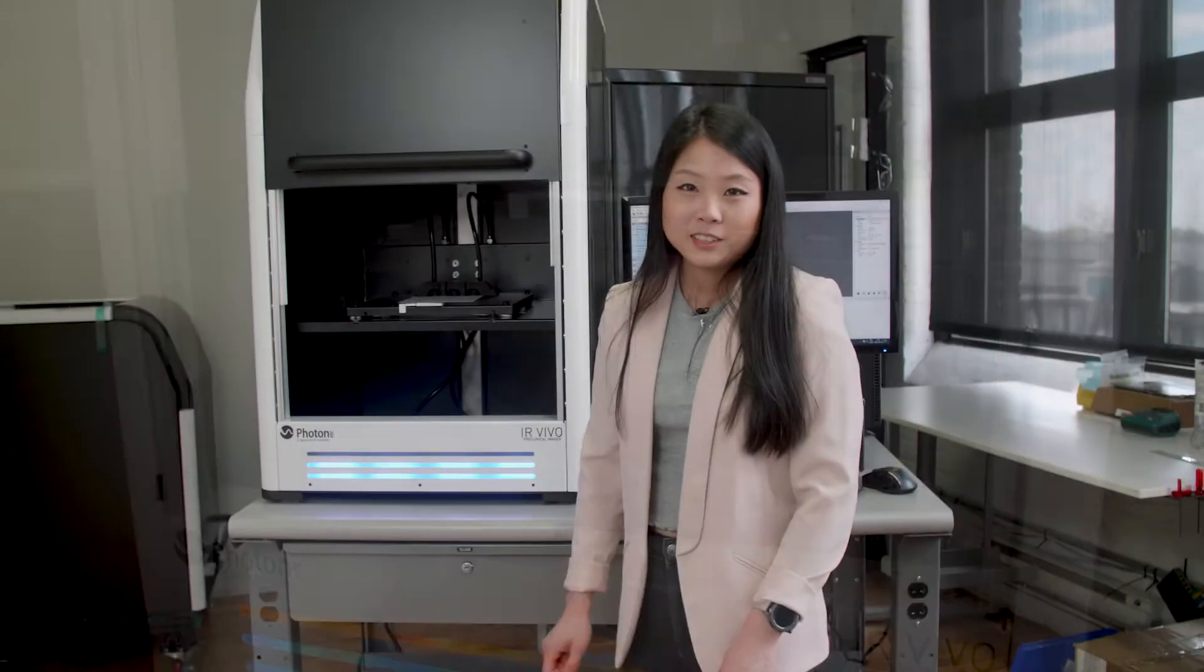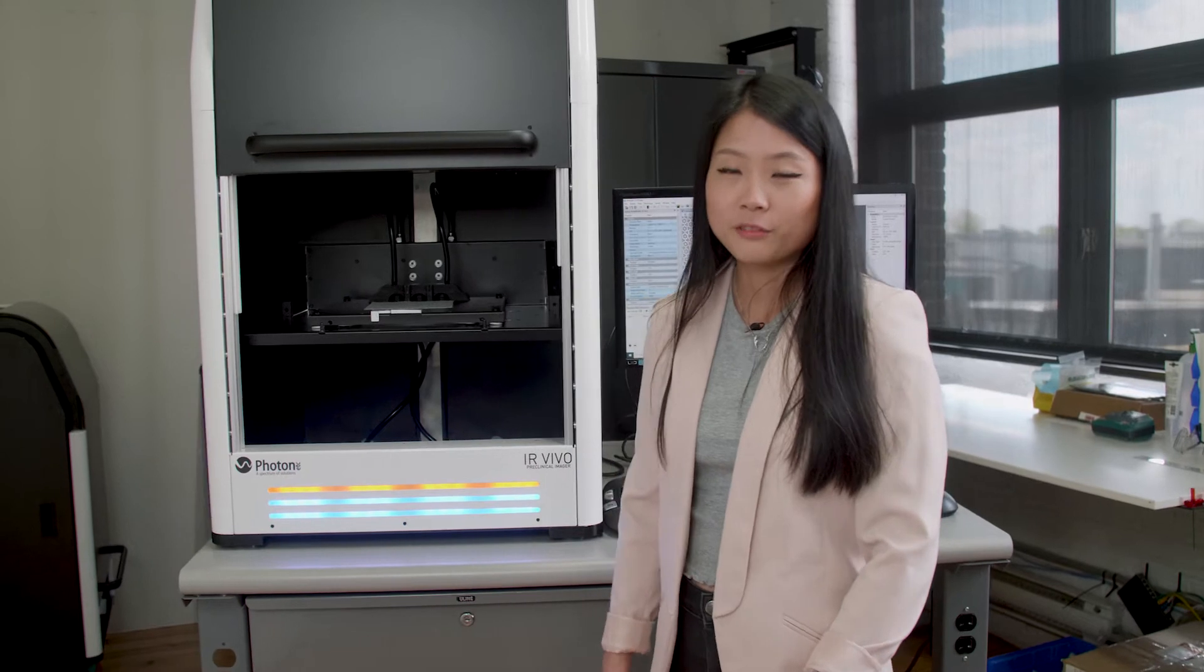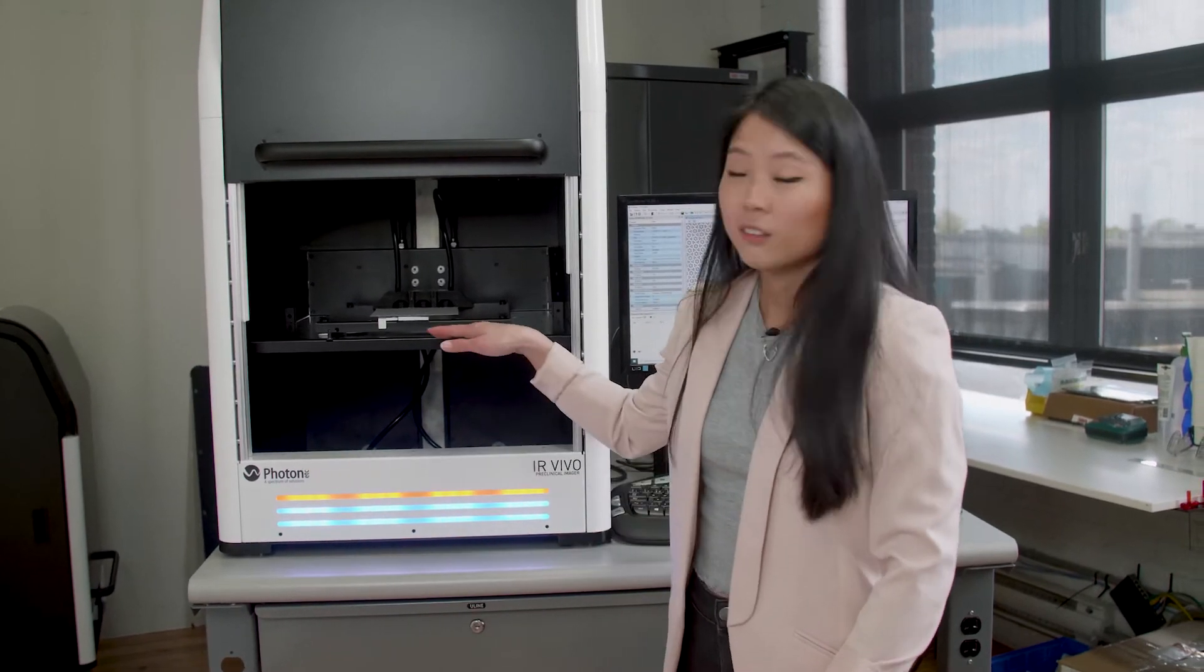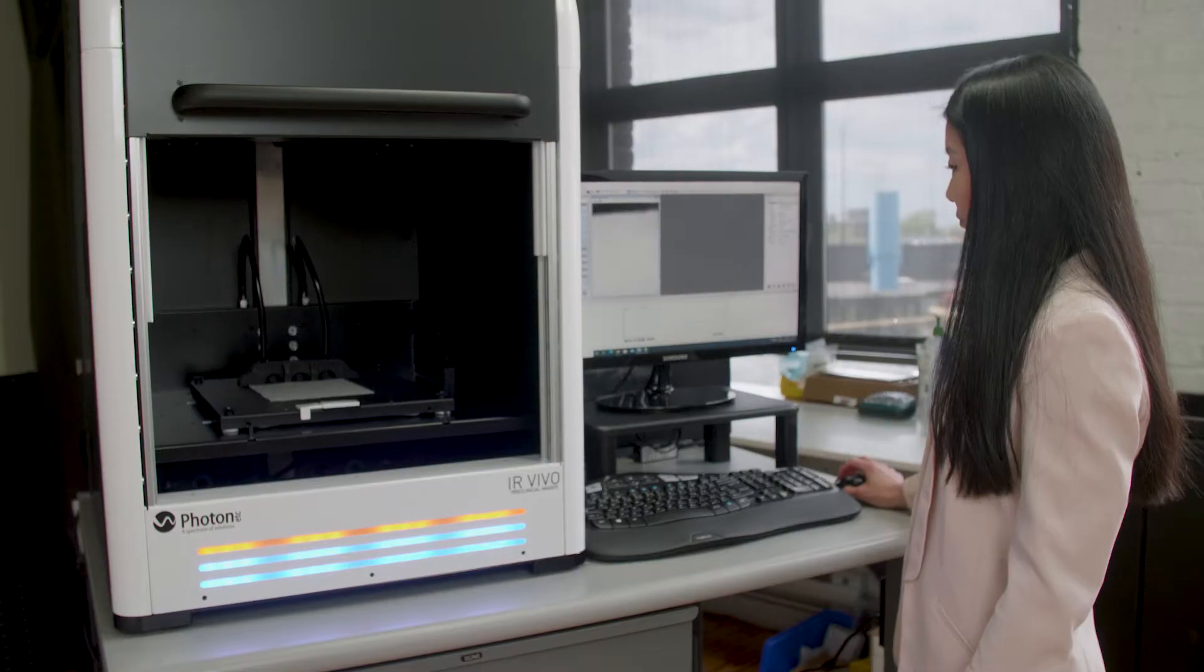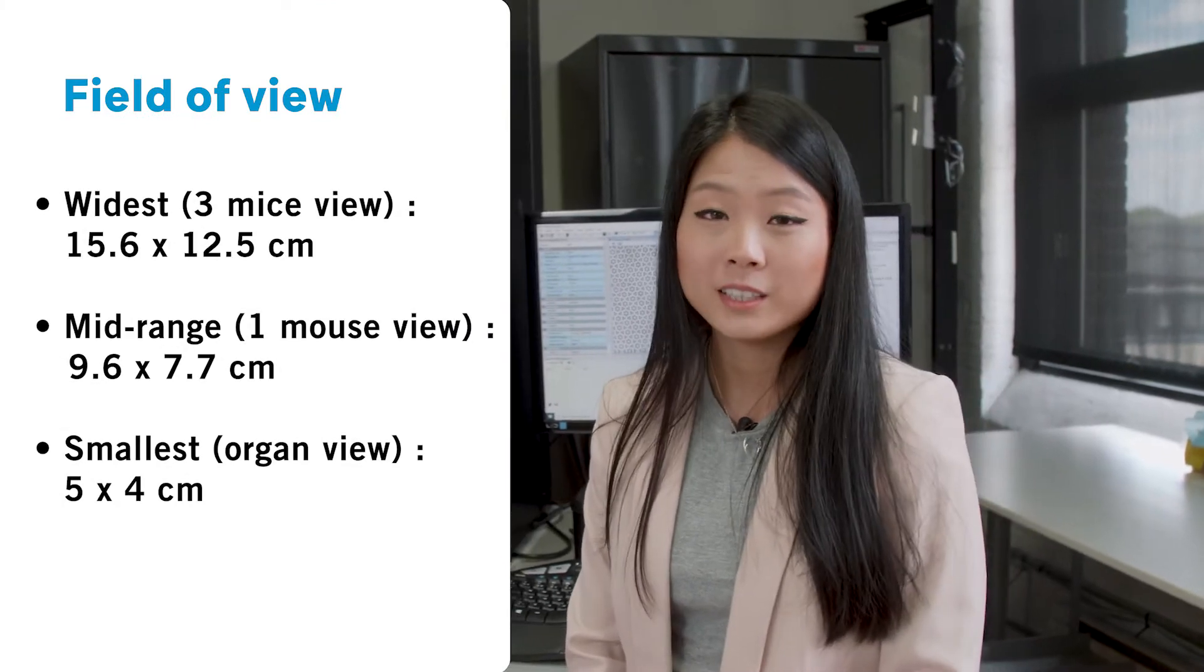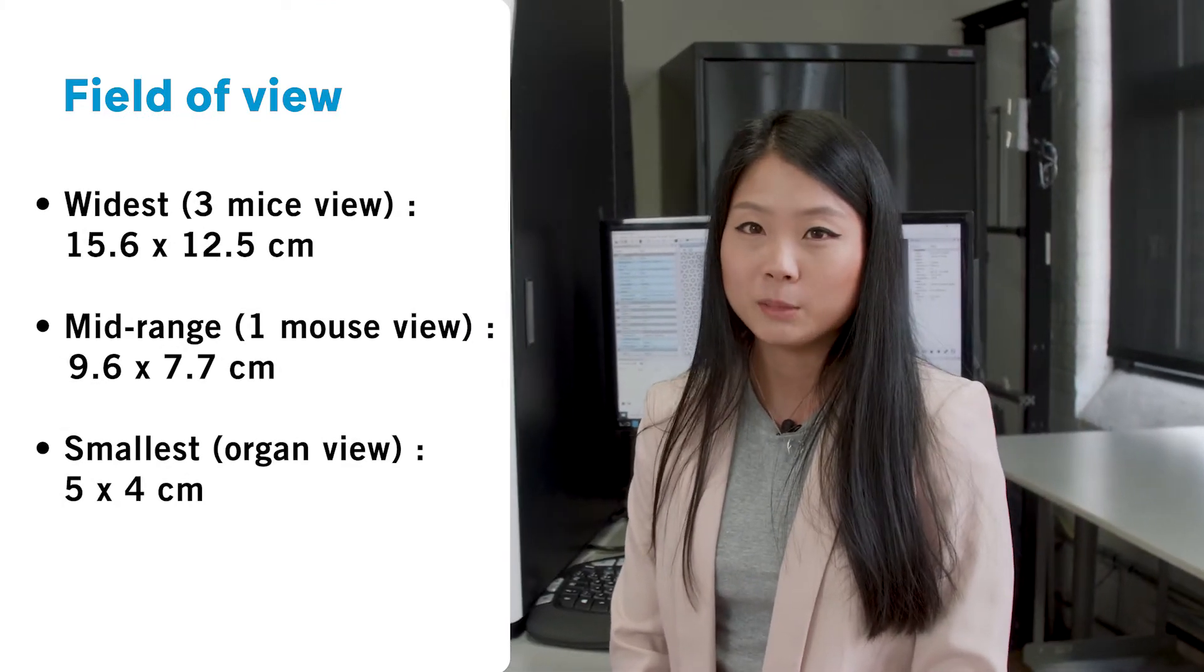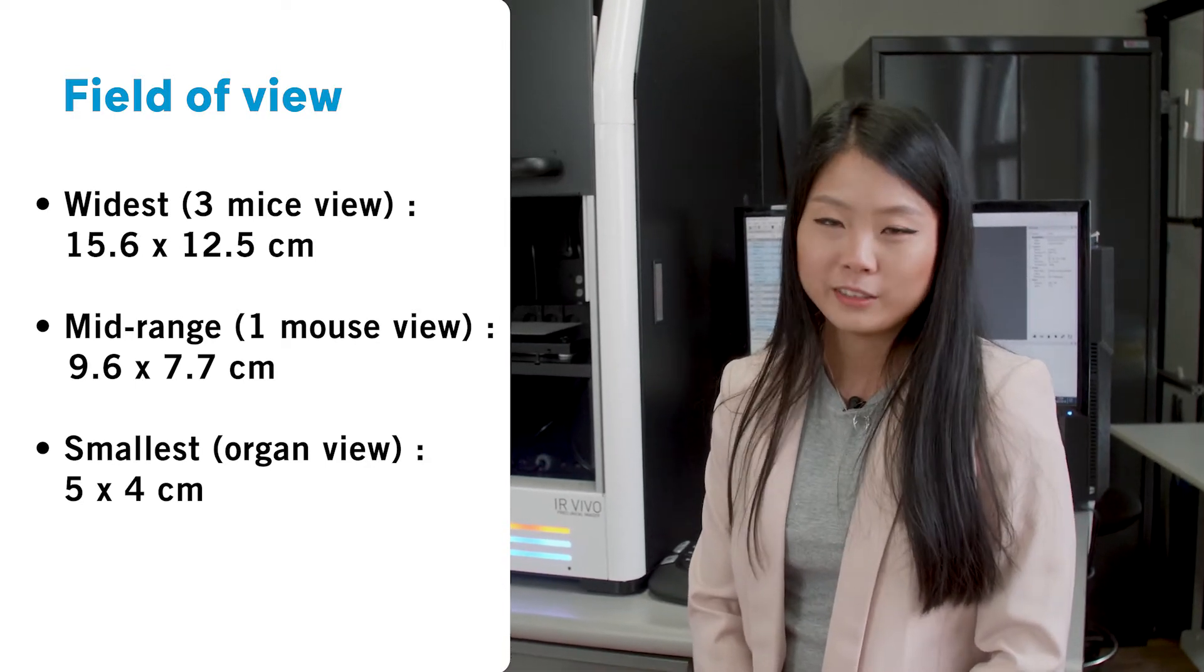We designed the system to be customizable on every part to fit all kinds of needs. For example, the animal stage can be fixed or motorized on the three axes, X, Y and Z. So the widest field of view possible is 15.6 by 12.5 centimeters and the smallest field of view possible is 5 by 4 centimeters.